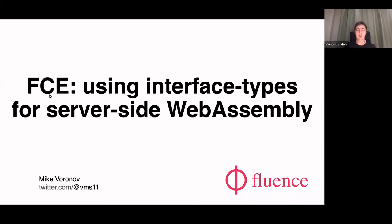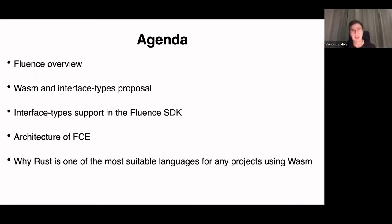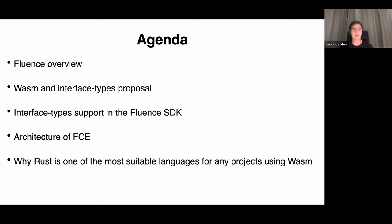FC is an engine intended to run a multi-modal WebAssembly application with help of interface types. The agenda of my talk covers: a Fluence overview — how, why, and what we are doing with Fluence — then WebAssembly and the interface type proposal, the Fluence SDK and two-stage compilation scheme, the architecture of FC, and finally why Rust is one of the most suitable languages for projects related to WebAssembly.